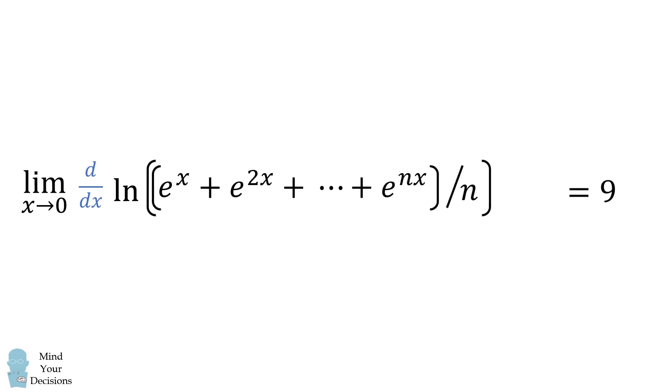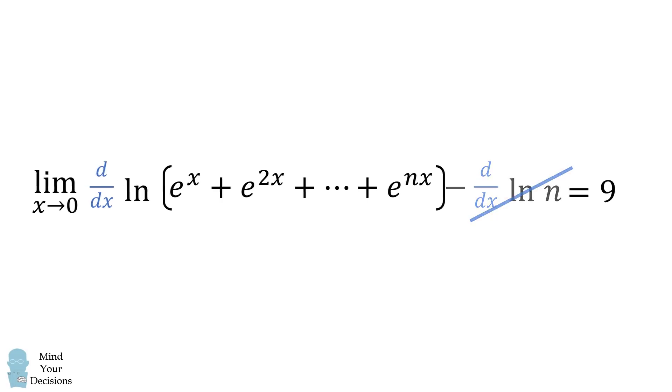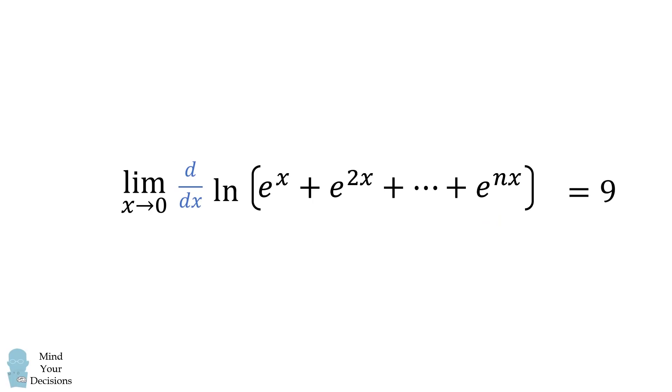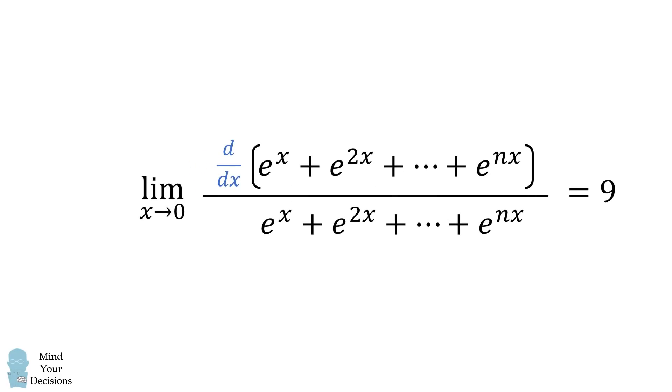So we now want the derivative of this natural log function. From here, we will use the quotient rule of the natural logarithm to get the natural log of the sum of these exponentials minus the natural log of n. We can then take the derivative of each of these separately. Now the derivative with respect to x of the natural log of n is equal to 0. So this term again will vanish. We now want to take the derivative of the natural log of something, so we'll use the chain rule. It'll be equal to du over u. So we have the derivative of the argument all over the argument.